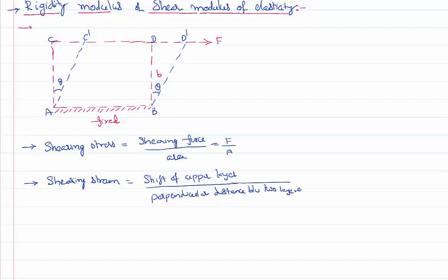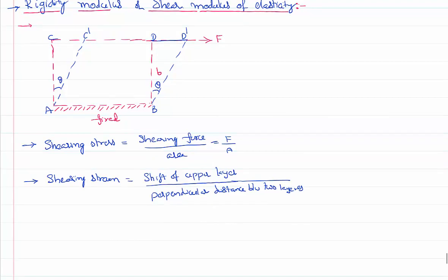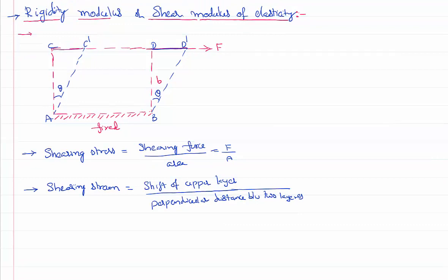This is the shift of the upper layer. It could be either CC dash or DD dash. This is the perpendicular distance between the layers. It is nothing but the breadth of the rectangle. So I can write shift of the upper layer as either CC dash or DD dash by the perpendicular distance as either AC or BD or we have called it like the breadth of the rectangle.